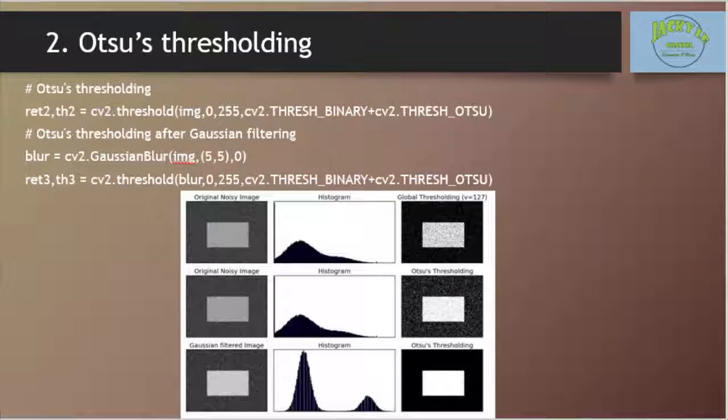In global thresholding, we use an arbitrary value for the threshold value. So, how can we know if the value we selected is good or not?